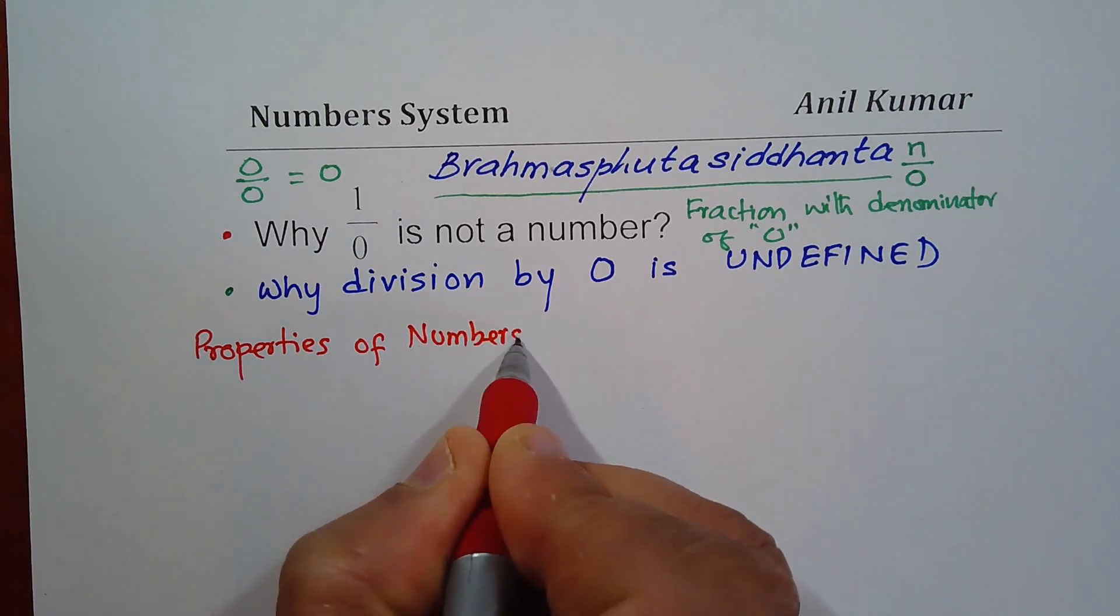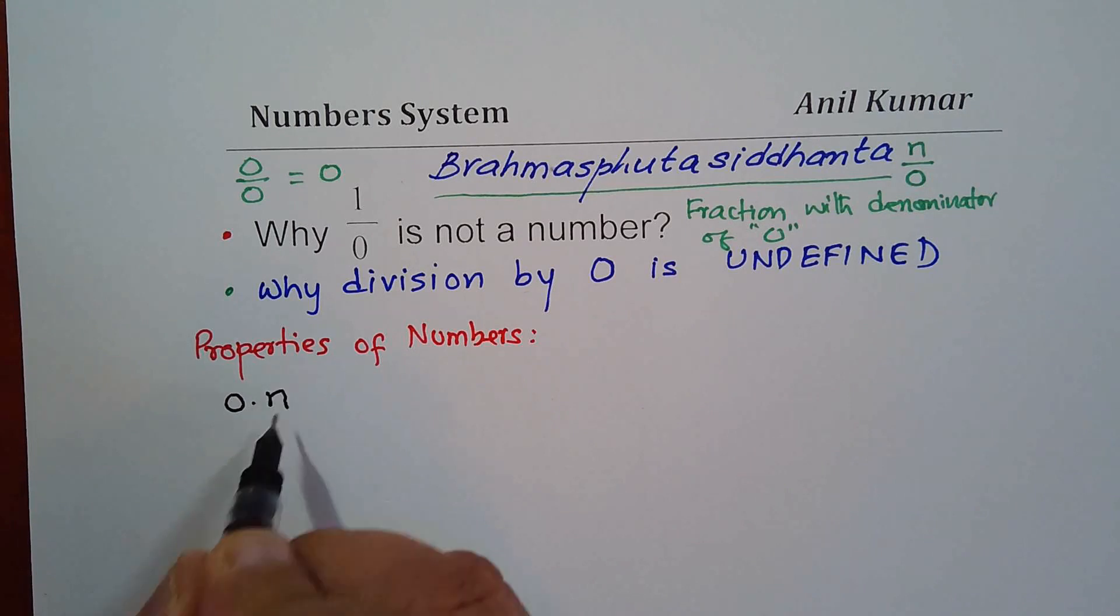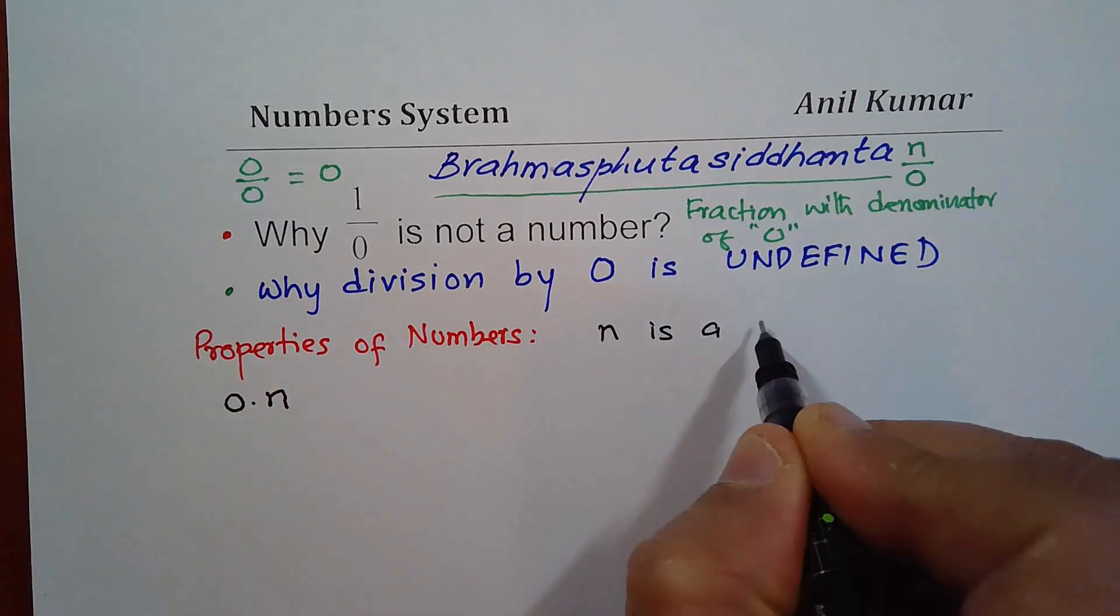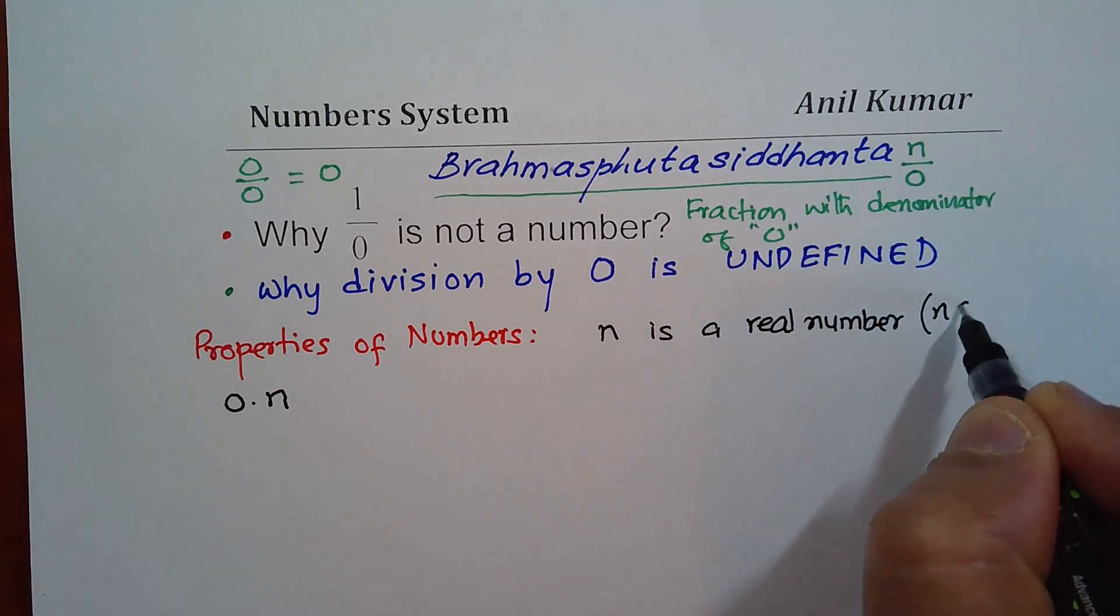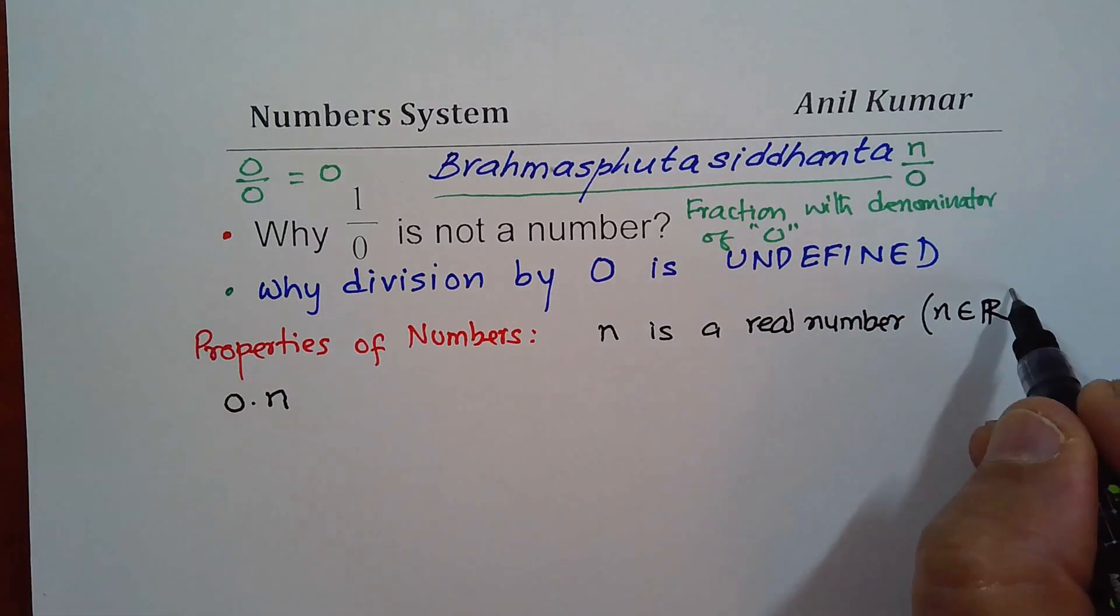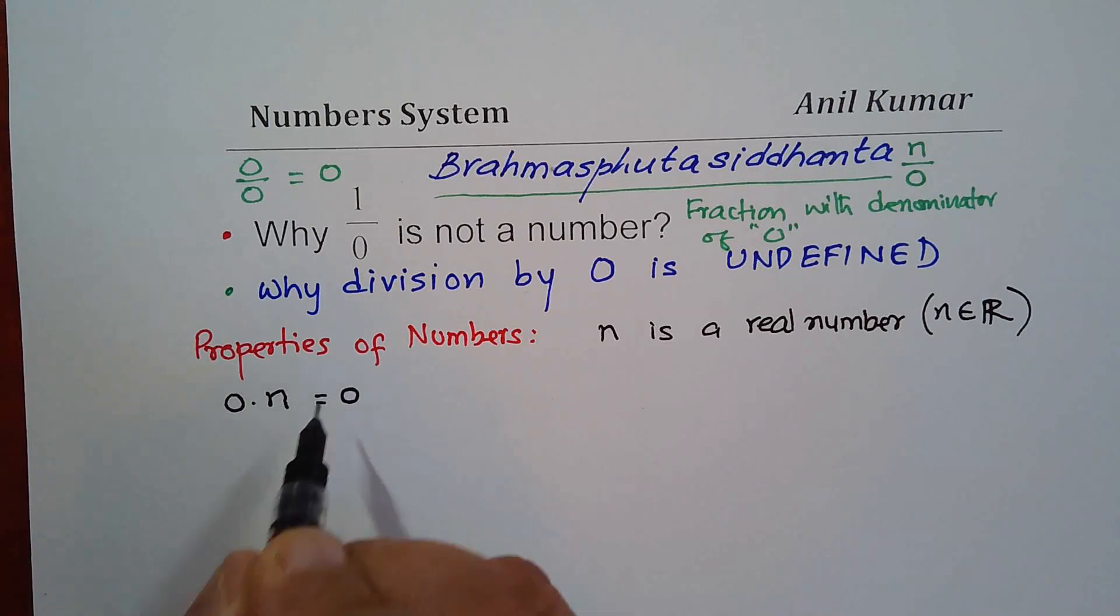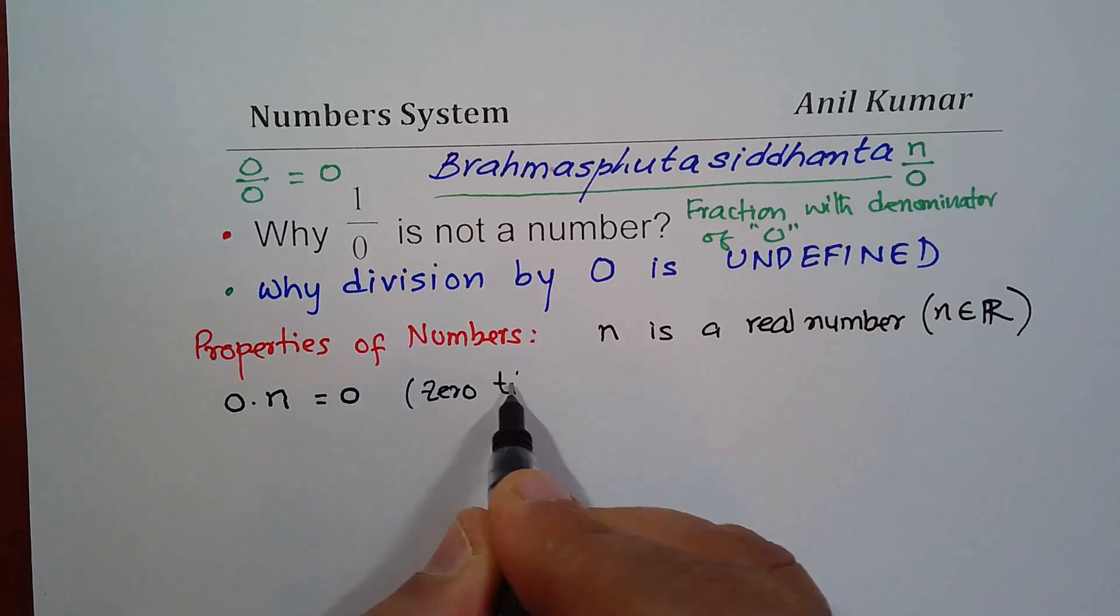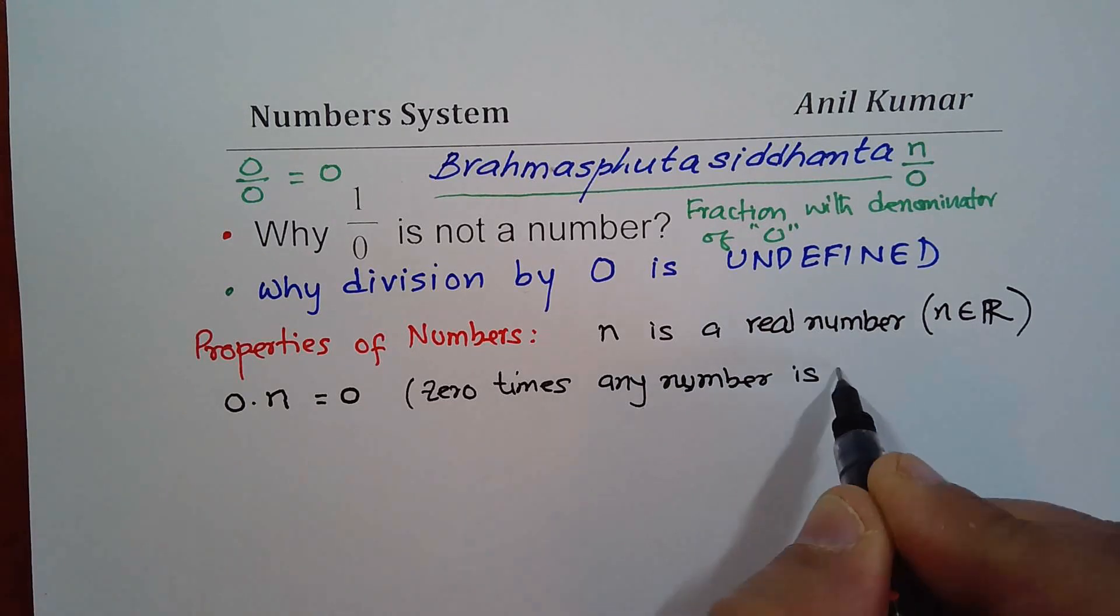Since we are talking about 0, we will take up some things with 0 related. We know 0 times, so this dot is for times, 0 times any number n. I'm writing n is a real number. So in short, you can say n belongs to real numbers. So 0 times any number is equal to 0. You know that, right? So we say 0 times any number is 0.